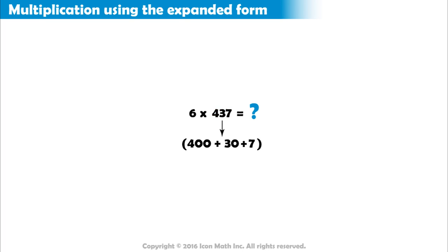So, when multiplying 6 by 437, it means that we multiply 6 by 400, 6 by 30 and 6 by 7. Then add up the results.